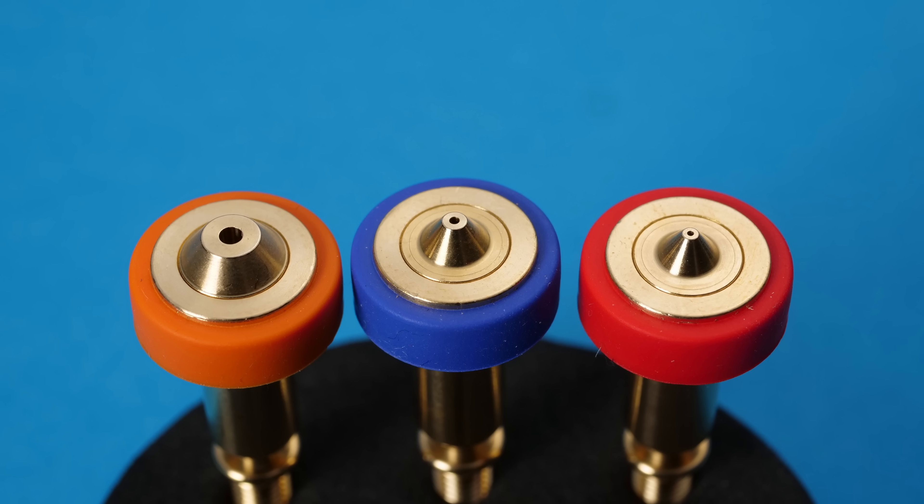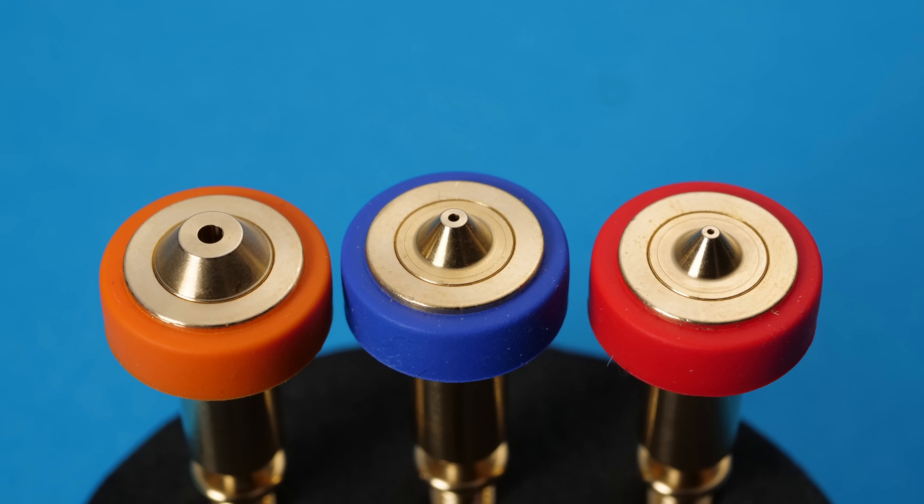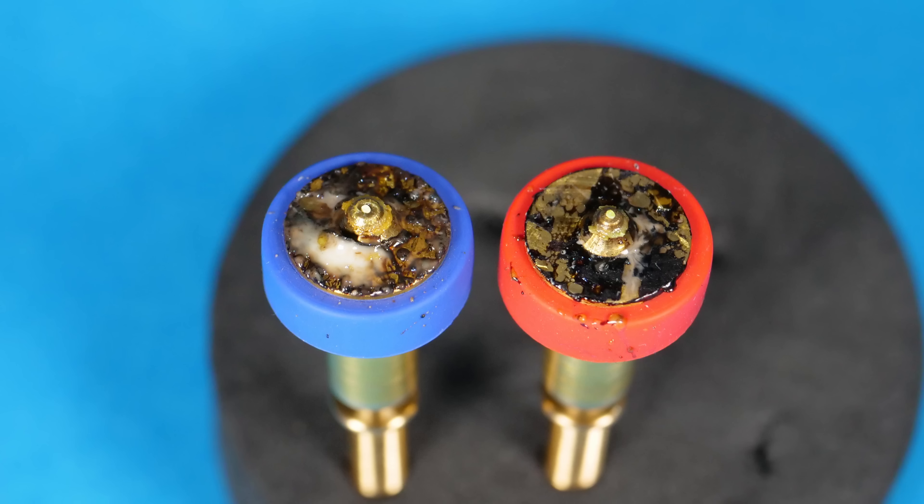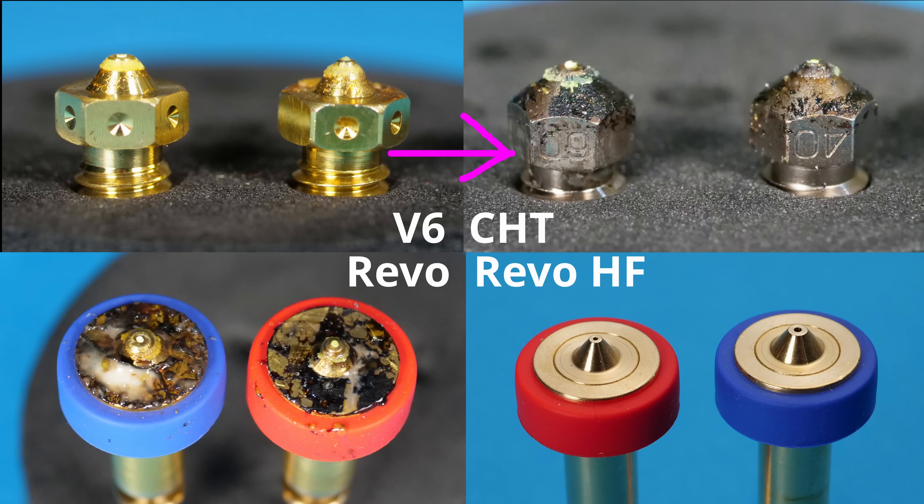To find out how well Revo High Flow works we need to compare it to two things: CHT and of course standard Revo. We can also compare the improvement of V6 to CHT and Revo to Revo HF to see how well each technology works in comparison to a standard flow equivalent.